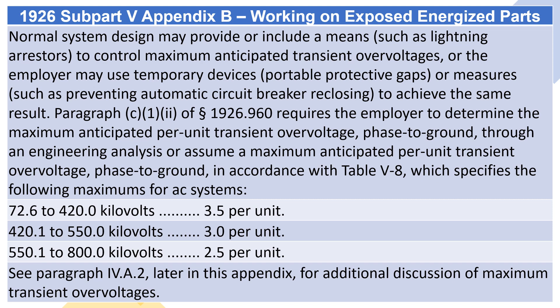Paragraph C.1.2 of Section 1926.960 requires the employer to determine the maximum anticipated per unit transient overvoltage, phase-to-ground, through an engineering analysis, or assume a maximum anticipated per unit transient overvoltage, phase-to-ground, in accordance with Table V-8, which specifies the following maximums for AC systems: 72.6 to 420.0 kilovolts — 3.5 per unit; 420.1 to 550.0 kilovolts — 3.0 per unit; 550.1 to 800.0 kilovolts — 2.5 per unit. See paragraph 4.A.C. later in this appendix for additional discussion of maximum transient overvoltages.